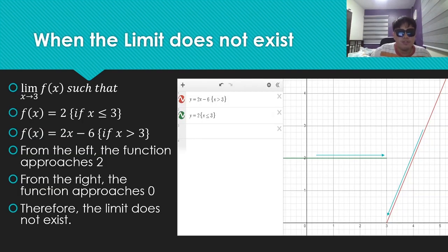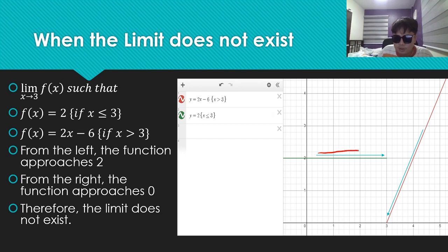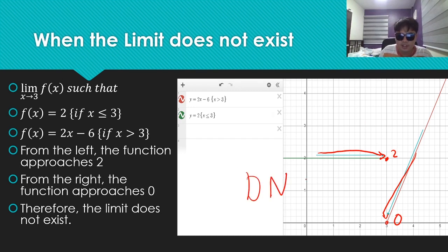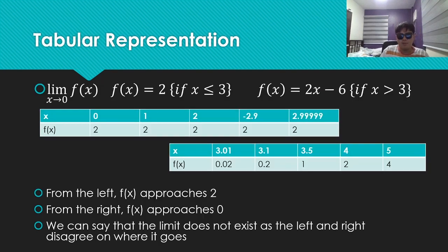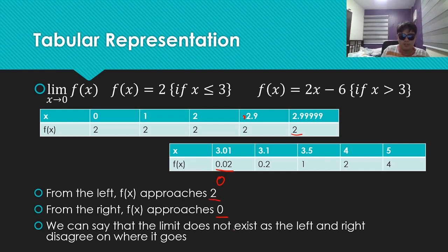How about this one? The limit of f of x as x goes to 3, where f of x equals 2 if x is less than or equal to 3, and f of x equals 2x minus 6 if x is greater than 3. Looking at the graph: from the left, the function goes to 2. From the right, it goes to 0. The left and right disagree on where it goes. Therefore, the limit does not exist. From the table: from the left, f of x approaches 2, 2, 2, 2 — getting closer to 3, it just goes to 2. But from the right, it goes to 0. They disagree, therefore the limit does not exist.